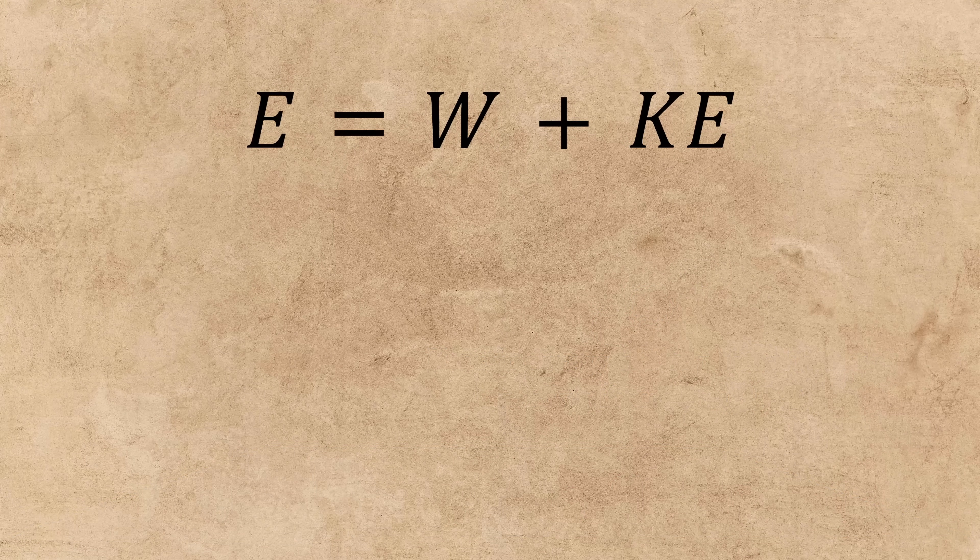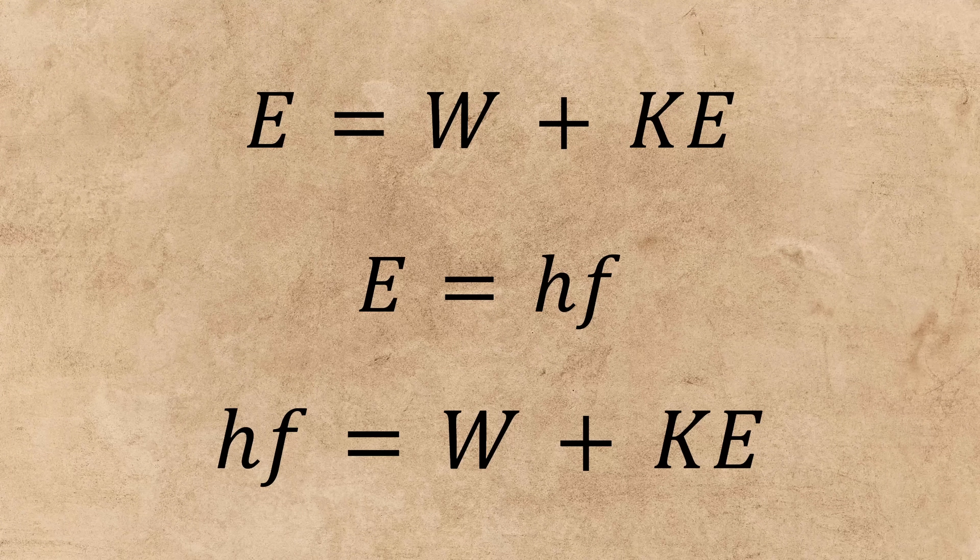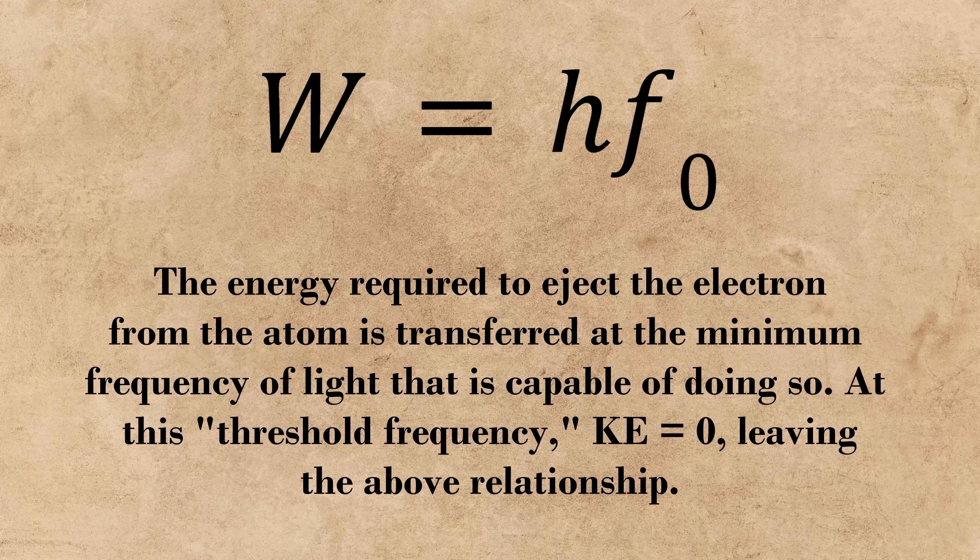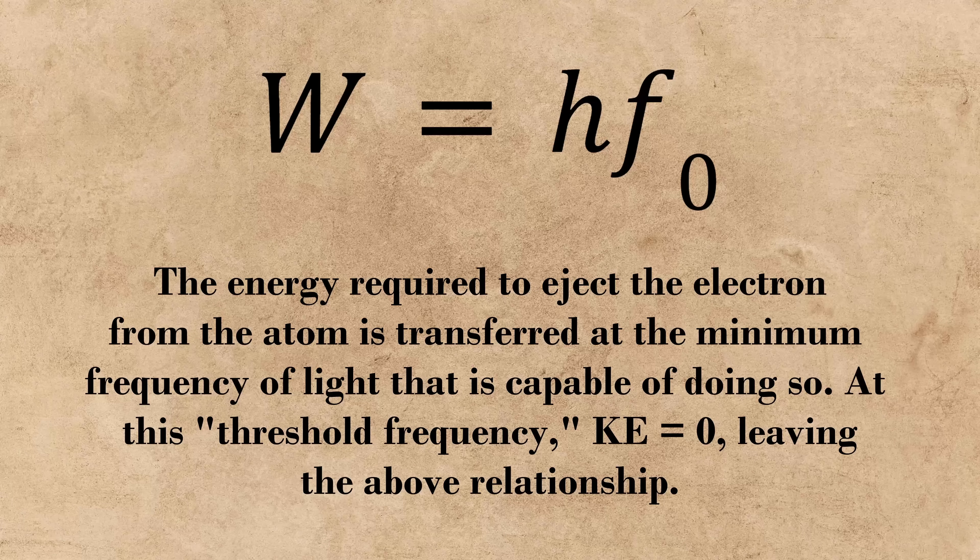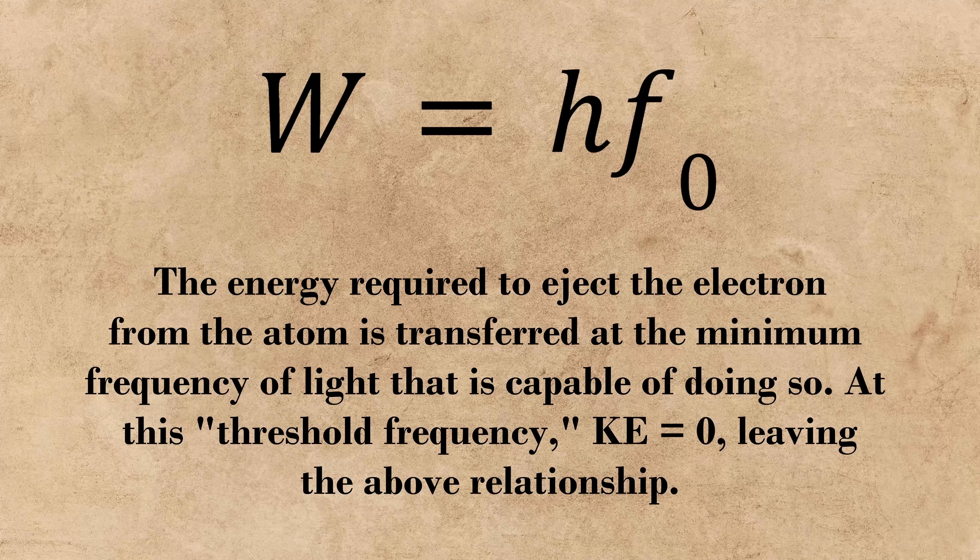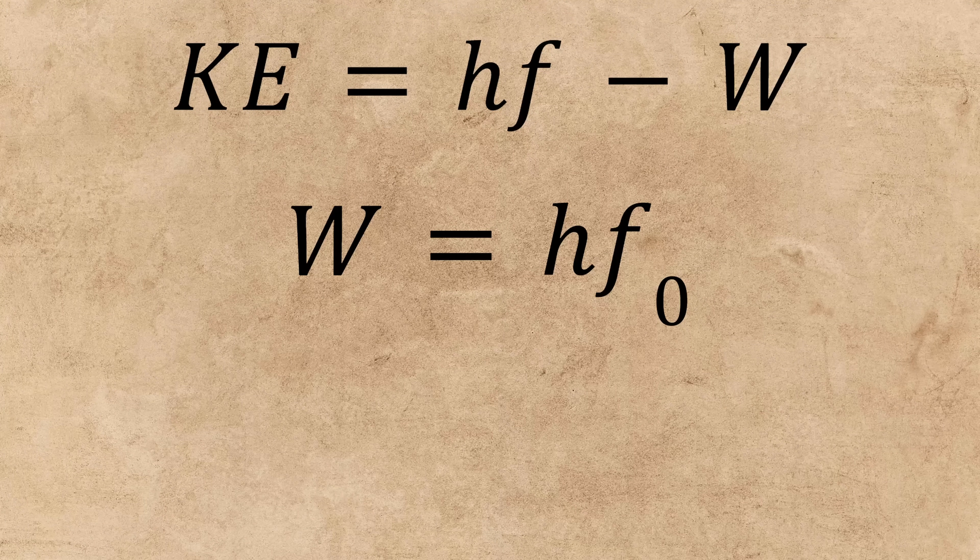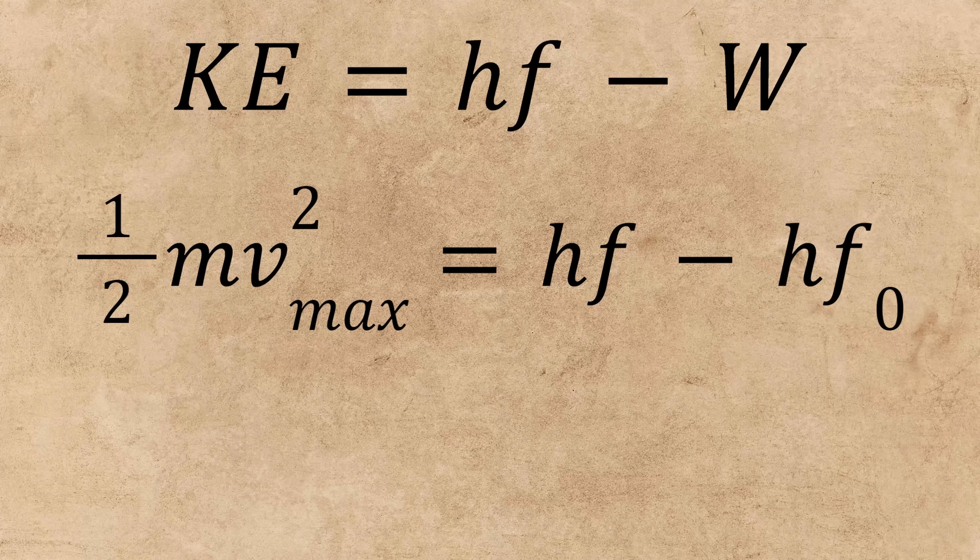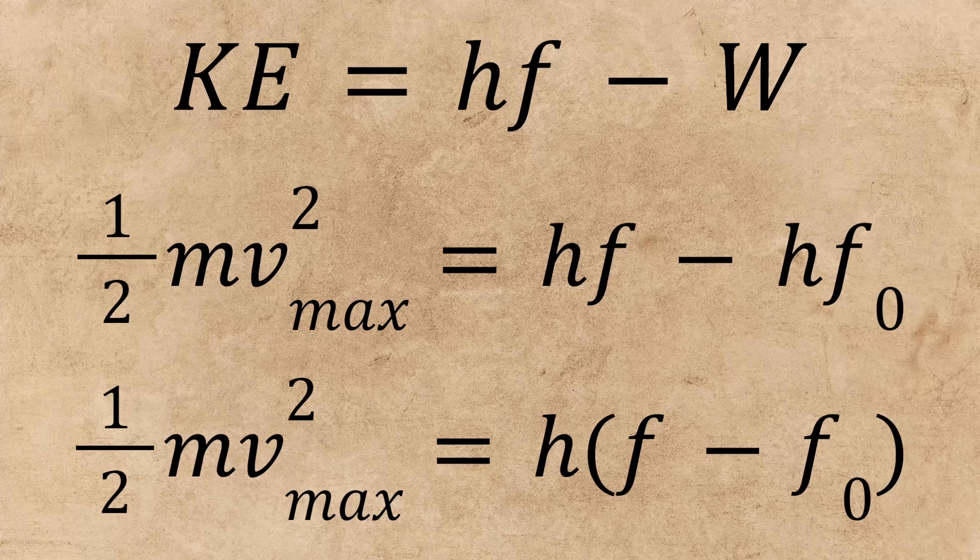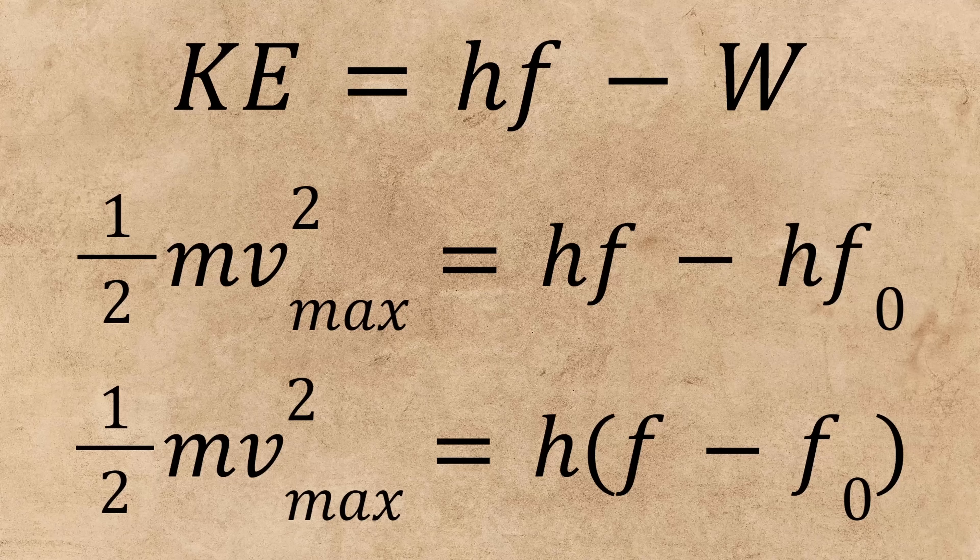Using this relationship for energy along with Planck's previously established relationship for energy, Einstein was able to do two key things. The first was establish a theoretical value for the threshold frequency, denoted experimentally previously by Lenard, and define it as equivalent to the work function of the atom. The second key factor in Einstein's explanation was determining the maximum kinetic energy a photoelectron can achieve during emission. Using his previously established relationship for the work function, he reached a relationship between the maximum kinetic energy of a photoelectron and the photon's frequency, incorporating Planck's constant and thus explaining the effect with quantum physics.